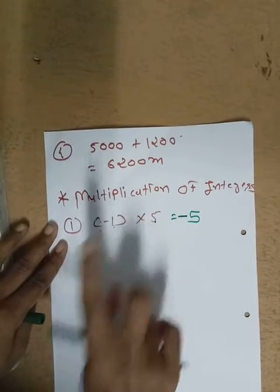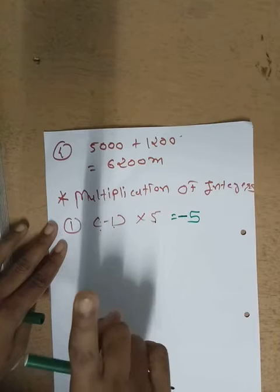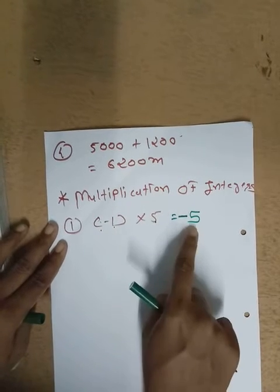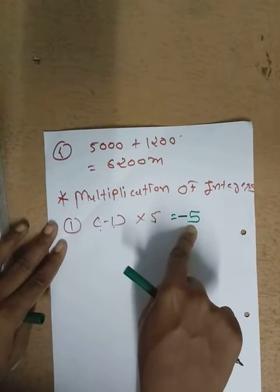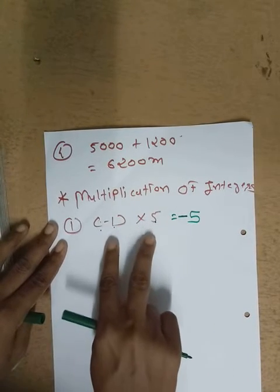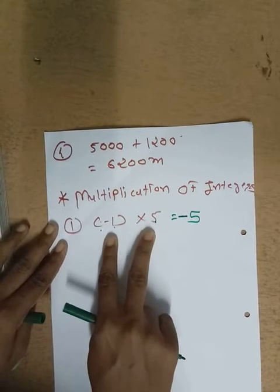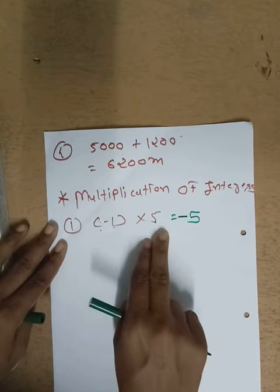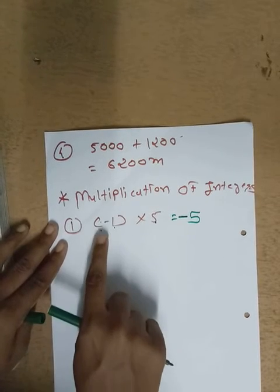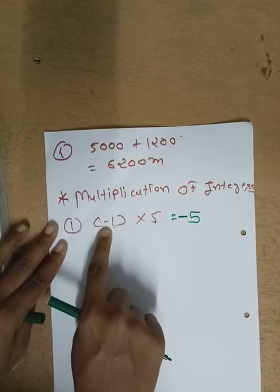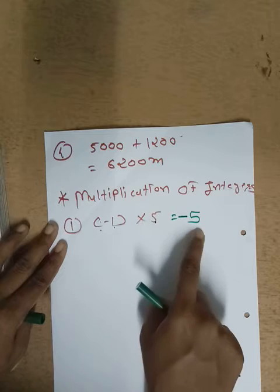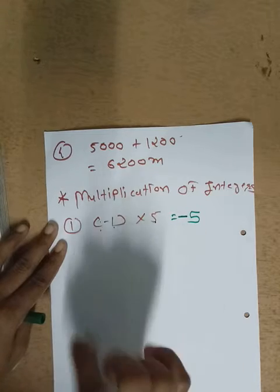In multiplication, out of two numbers, if one number is negative, then the answer will be negative. Here we have two numbers: minus one and five. One number is negative — minus one is negative. So the answer is minus five.